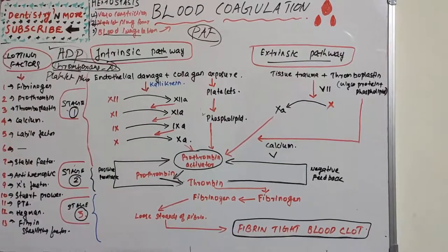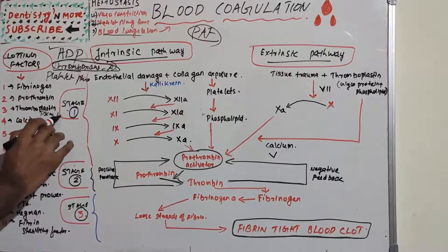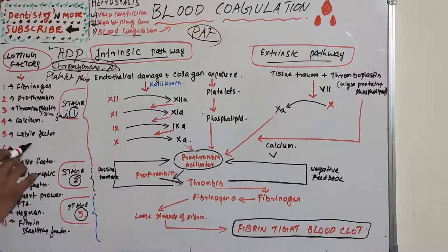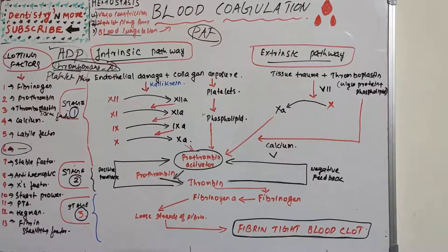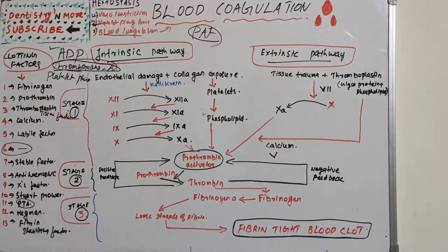There are 13 clotting factors. Factor 1 is fibrinogen, 2 is prothrombin, 3 is thromboplastin also known as tissue factor, 4 is calcium, 5 is labile factor, 6 is not yet proved, 7 is stable factor, 8 is anti-hemophilic factor, 9 is Christmas factor, 10 is Stuart-Prower factor, 11 is plasma thromboplastin antecedent (PTA), 12 is Hageman factor or contact factor, and 13 is fibrin stabilizing factor.